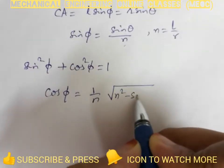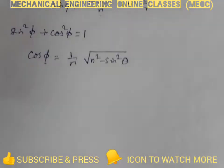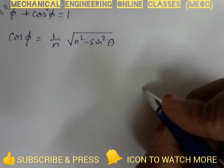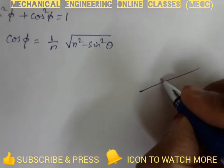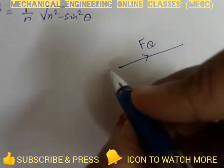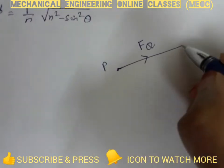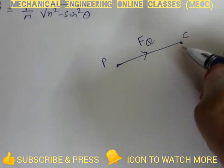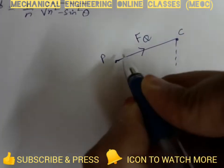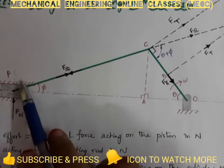Now consider triangle PAC. We have fq along the connecting rod. Let P be the point at the piston, C is the end of the crank, and we have dropped a perpendicular from this onto the line of stroke, which we named A.